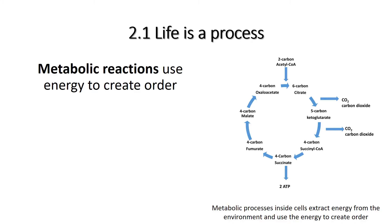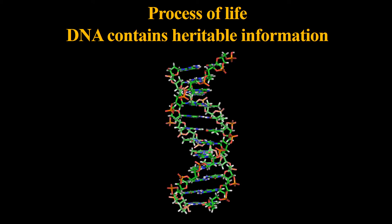Life uses energy to create order, but you just can't add energy to something and expect to get order out of it. Think about a hurricane or a tornado — that's got a lot of energy, but it doesn't create order. Life uses metabolic reactions to use energy to create order. The Krebs cycle, for example, is used to extract energy from organic molecules, and then our cells can use that energy to do work and create larger, more complex molecules. Every cell has thousands of different types of metabolic reactions, and those metabolic reactions have to have enzymes to carry out the chemistry, and they have to be regulated.